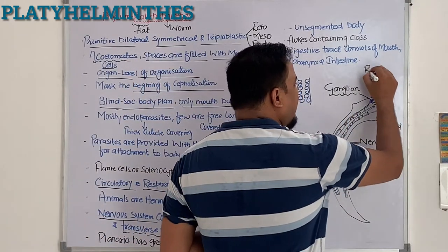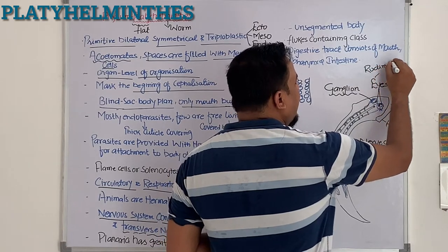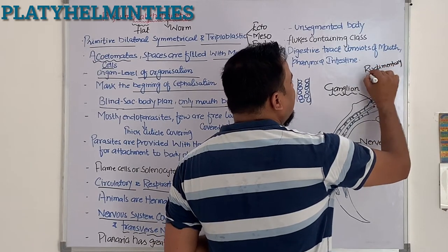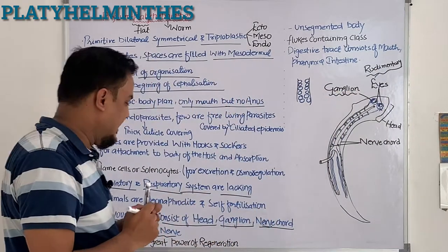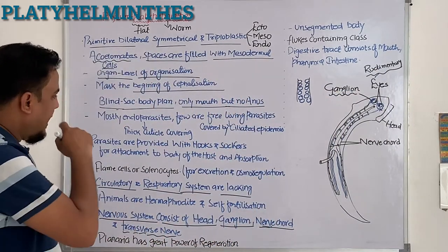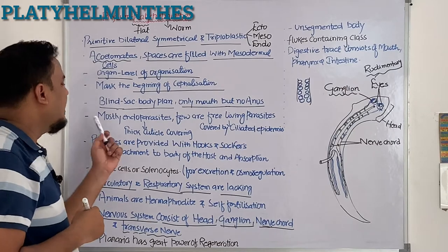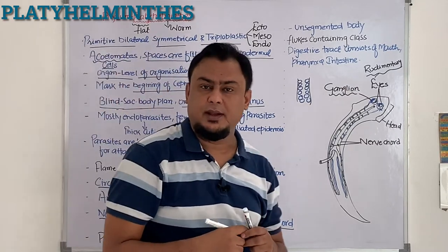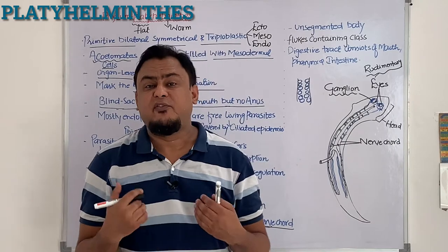Rudimentary means eye spots are there, but they are not well-developed eyes like ours. Now, one more important thing: mostly these animals are endoparasites. The best examples are flukes — blood flukes or liver flukes.